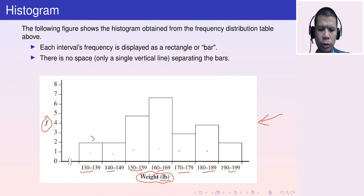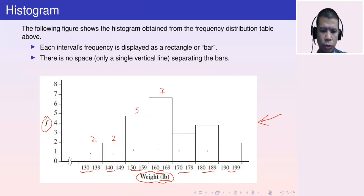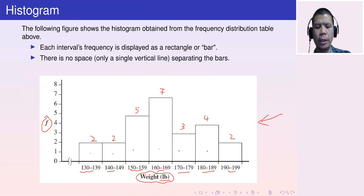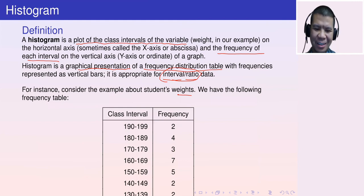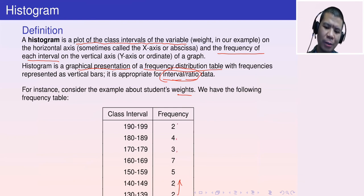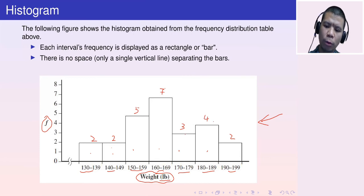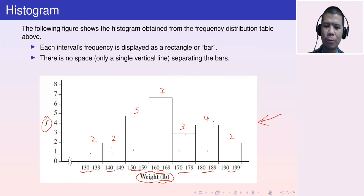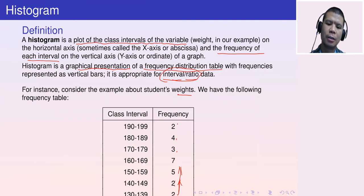Looking at the heights from left to right: 2, 5, 7, 3, 4, 2 — and reading the frequencies from the table from bottom to top also gives 2, 2, 5, 7, 3, 4, 2. The height of each bar equals the frequency of the corresponding interval.